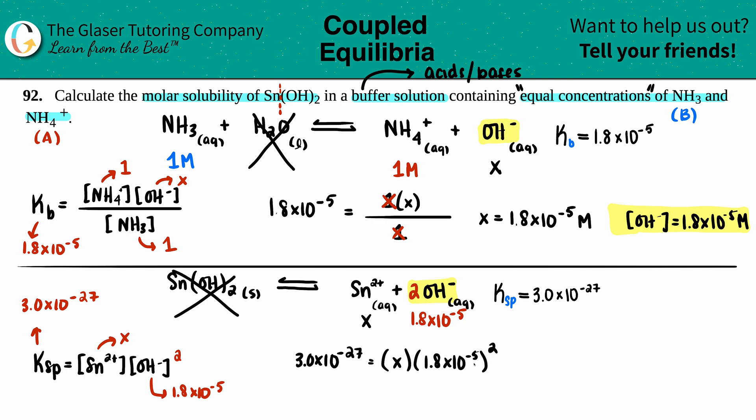We can just do 1.8 times 10 to the negative fifth squared—that's 3.24 times 10 to the negative tenth. I'm just going to erase this and say that's 3.24 times 10 to the negative tenth.